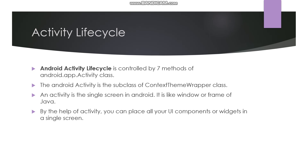An activity acts as a window or frame — a container — where you put UI components and graphical components. By the help of an activity, you can place all your UI components or widgets on a single screen. Each screen in an application is called an activity. If the navigation goes on to another screen, then it is called another activity.